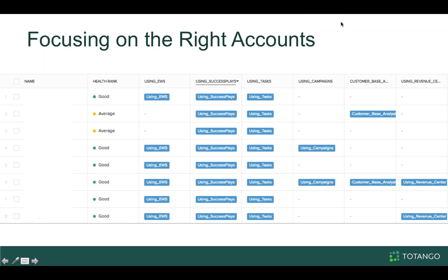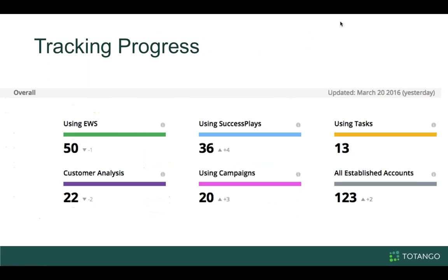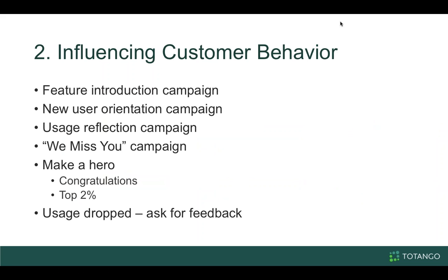Now that I've got this dashboard, I've turned it into a report for a different kind of visual. The first visual helps me focus on what accounts aren't using what I need them to be using — I can see all accounts, how many are using each use case overall, or narrow down by segments based on contract value, number of users, CSM, or health. I can see that I have growth under success plays and campaigns, but not under customer analysis, so I need to focus on making sure that trend line doesn't keep going down.